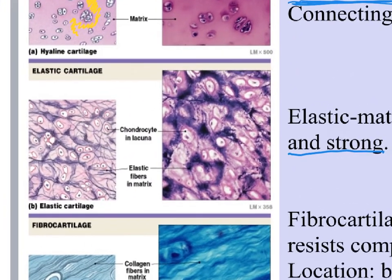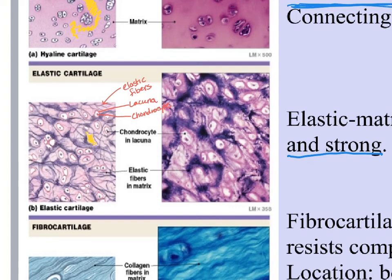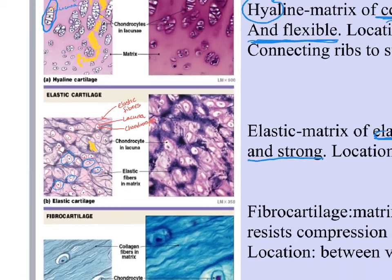Let's look at elastic cartilage under the microscope. The fibers are these little string-like purple structures. The lacunae are those little pockets, and inside you can see the chondrocyte — that little purple dot. In the pink background is the ground substance, the chondrin. There you have all three components of connective tissue: ground substance, fibers, and cells. One of the other things you notice is that the chondrocytes aren't stacked on top of each other — they're a little bit more independent from one another, which is different from what we see in hyaline cartilage.